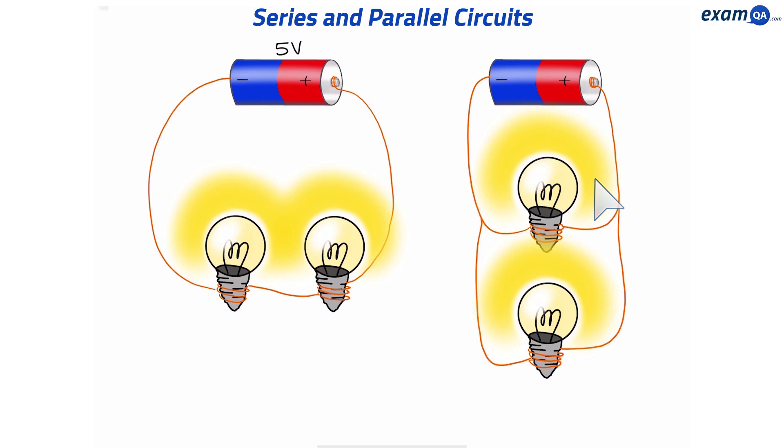But notice, the two circuits I've made are slightly different. On the left side, the bulbs are attached end to end. This is called a series circuit. And on the right, the bulbs are side by side. So here we have a parallel circuit.